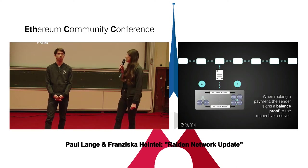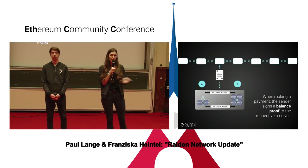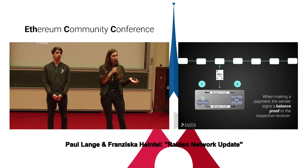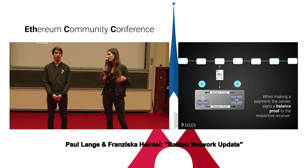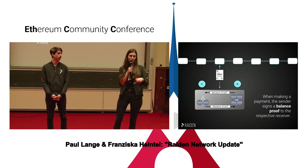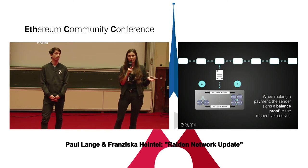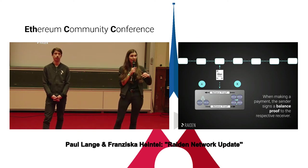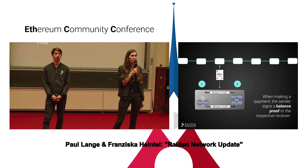What happens off-chain is basically that you send balance proofs with the party that you want to exchange value with, back and forth. You can think of these balance proofs like digital checks. You send as many payments back and forth between counterparties, and at some point you decide you want to cash out. The net balance of all the transfers done off-chain gets submitted on-chain, and you can cash out your remaining deposit.